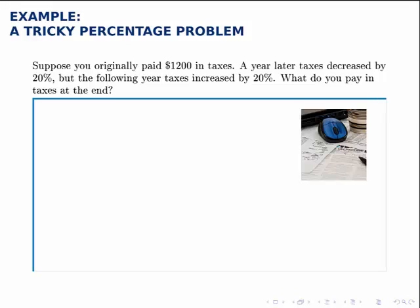I call this a tricky percentage problem, because when you first look at it, you think, well, if they dropped by 20% one year and then they rose by 20% the next year, they should be back to $1,200. But, as we'll find out, that's not what actually happens.